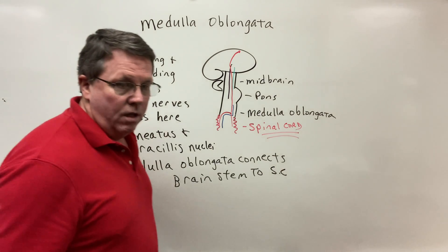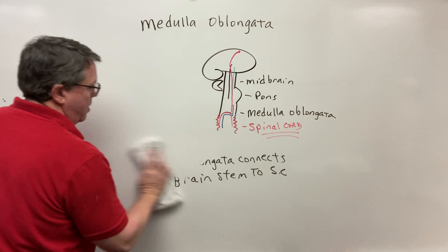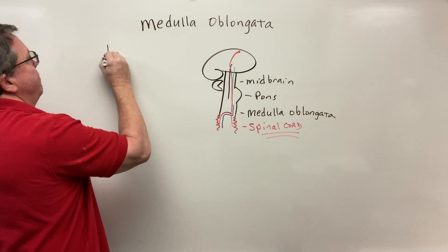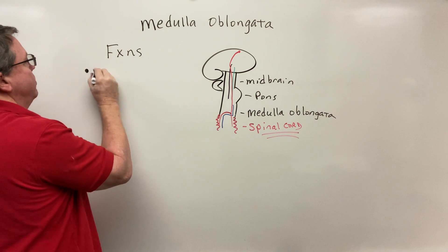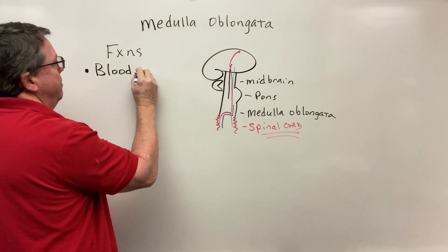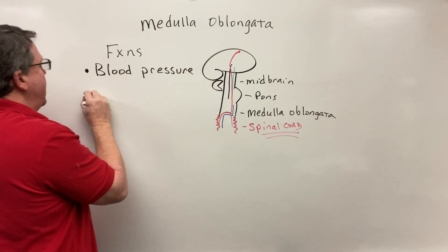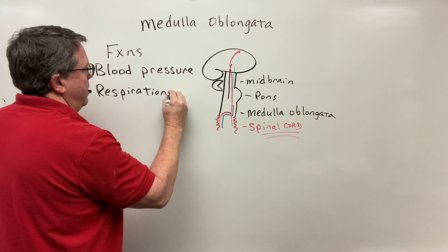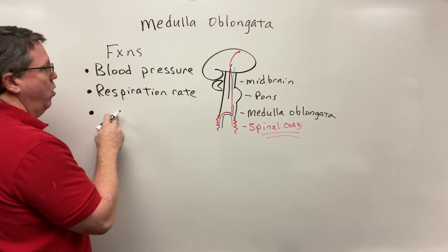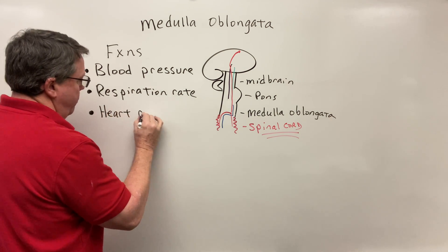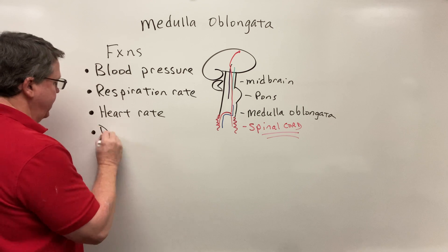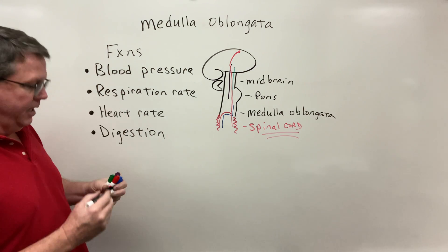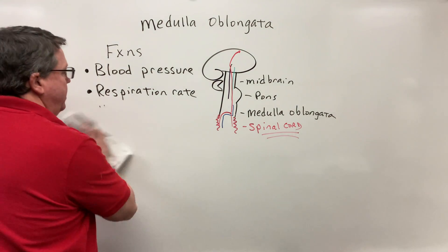Now let's look at the functions of the medulla oblongata. It is responsible for regulating blood pressure, it plays a role in respiration rate, it plays a role in heart rate, and it plays a role in digestion. Let's take a look at how the medulla oblongata carries out these functions — I'm going to redraw the brainstem a bit bigger.